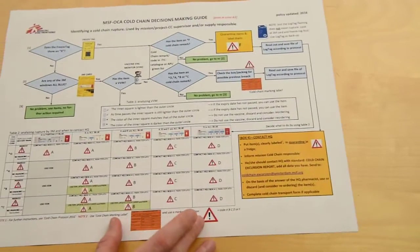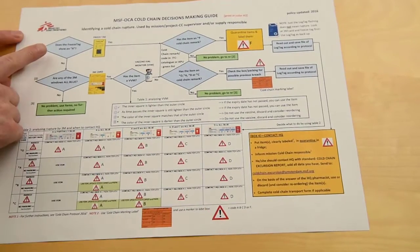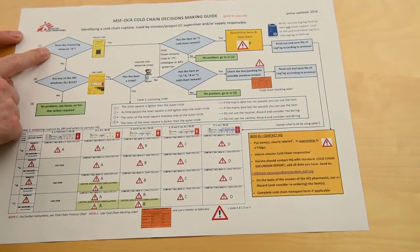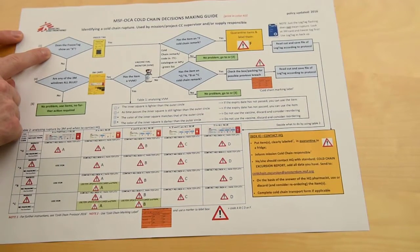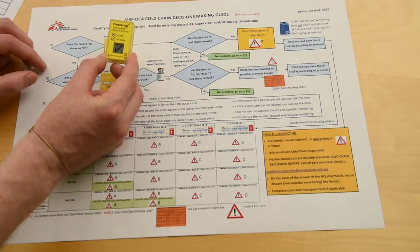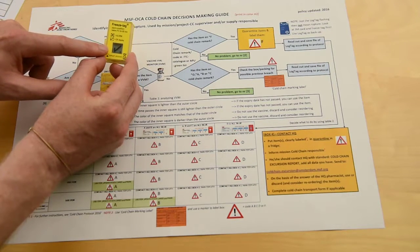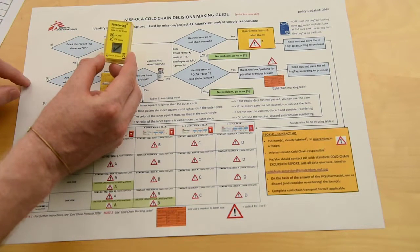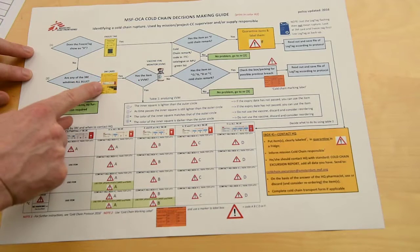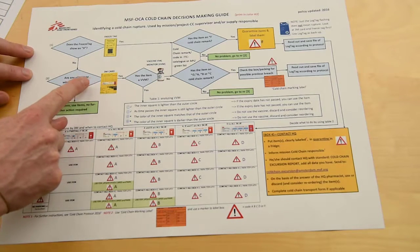Looking at the decision making guide we start at the top left-hand corner. We check the freeze tag and here we see the tick mark, so there wasn't a problem with freezing in this box during transport.